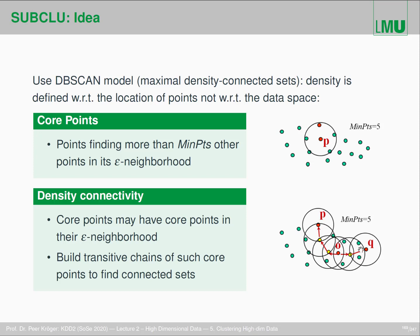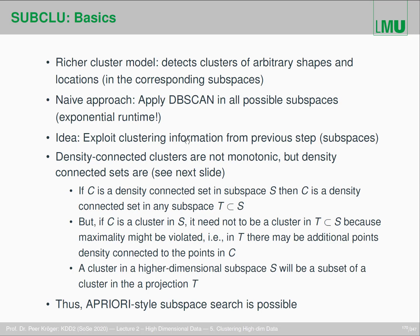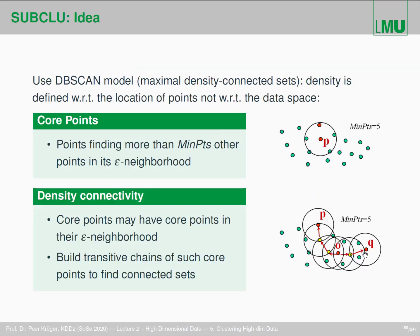This forms a kind of connected chain, and there may be several chains. As long as you follow those chains, you don't leave the cluster. Density connectivity is an important concept. The cluster model is the maximal density-connected set — you collect all points from all chains you can follow as long as you don't leave the dense area. That is the cluster model of DBSCAN.